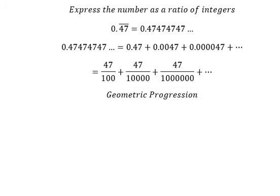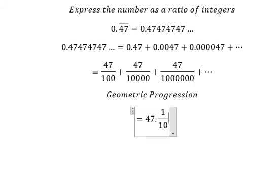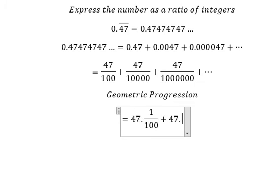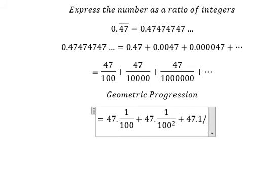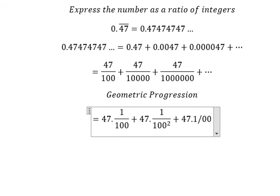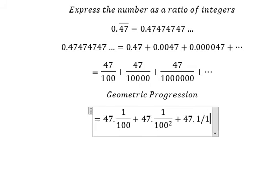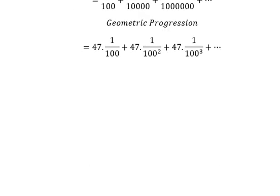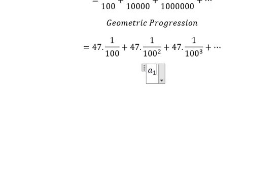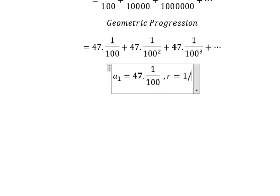So we can write it like this. After we analyze it this way, we see that the first term is about this one, and the common ratio is 1 over 100.